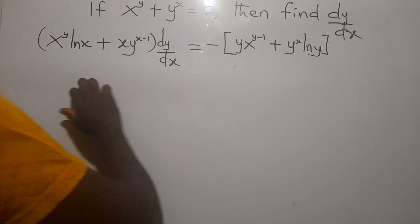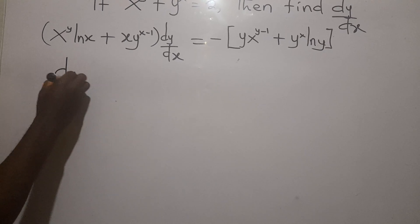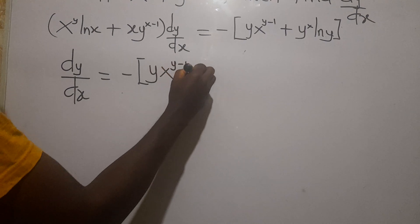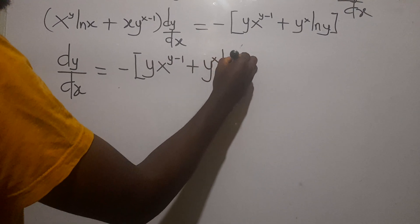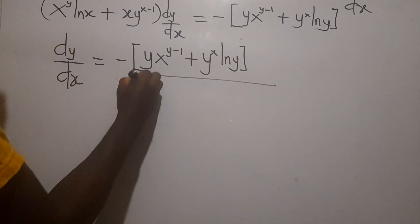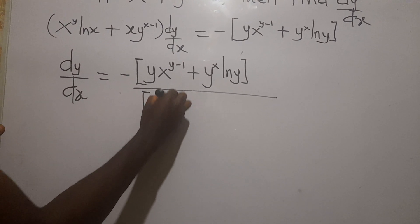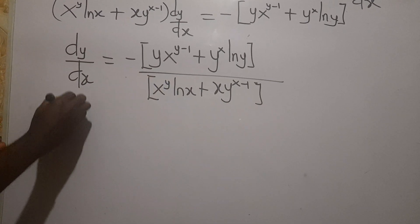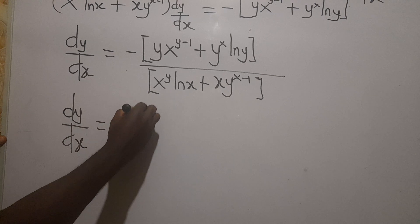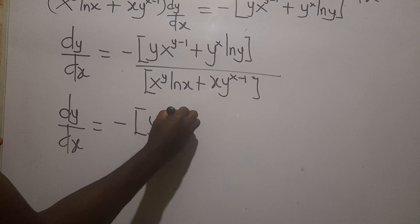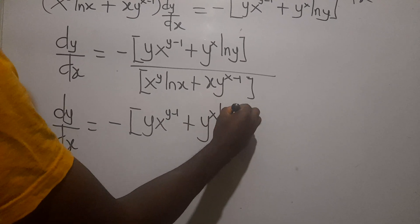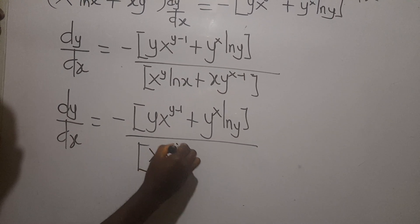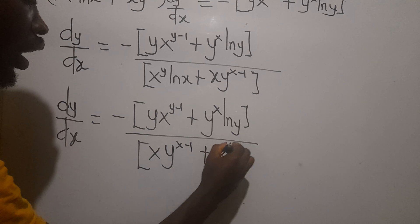To find dy/dx, divide both sides. So dy/dx equals negative of y times x exponent (y minus 1) plus y exponent x times ln y, all over x exponent y times ln x plus x times y exponent (x minus 1). Or rewriting, dy/dx equals negative of y times x exponent (y minus 1) plus y exponent x times ln y, over x times y exponent (x minus 1) plus x exponent y times ln x.